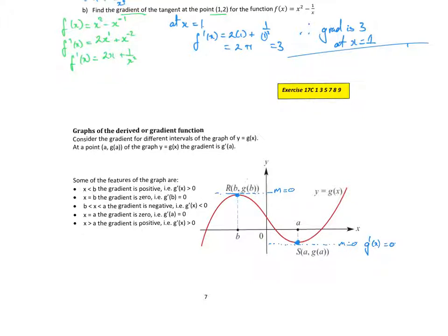What about to the right of a? That section there has a positive gradient. So concentrate on the x value — for x greater than a, the gradient or the derivative is greater than 0. And obviously at x equal to a, the gradient is 0.